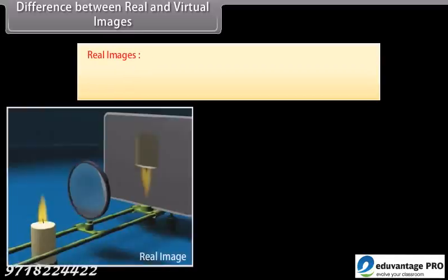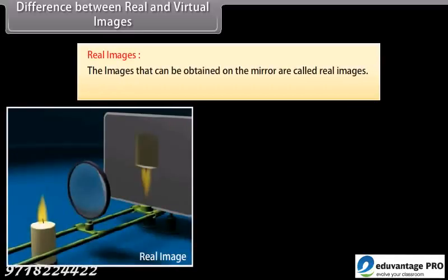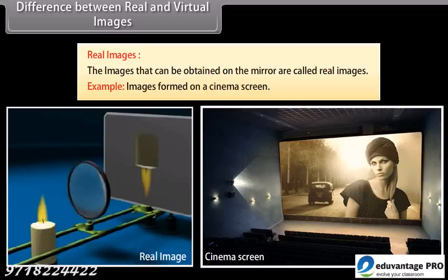Difference between real and virtual images. Real images: the images that can be obtained on a screen are called real images. Example: images formed on a cinema screen. It is formed by a concave mirror.